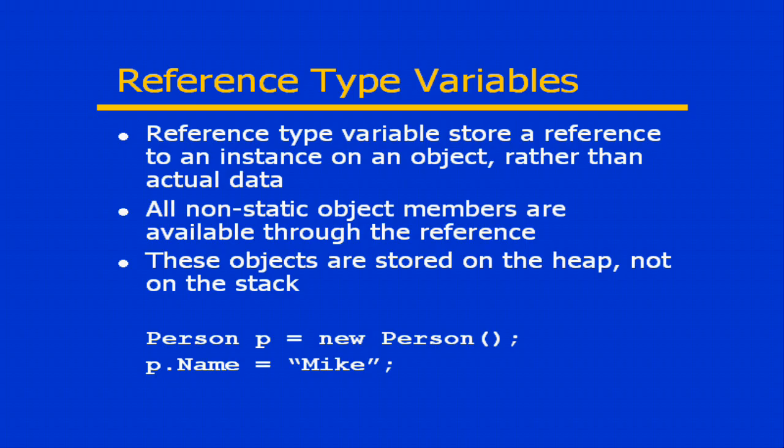A reference type variable stores a reference to an instance of an object rather than any actual data itself. All non-static object members, whether those be fields or methods, are available through this reference, and these objects are stored on the heap, not on the stack. We've also seen the basic instantiation — here we've got a variable P defined as type person. To create an instance of the person class: person P equals new person. Then any public or accessible methods or fields, such as name, allow me to make changes to that element by going through the reference variable P.